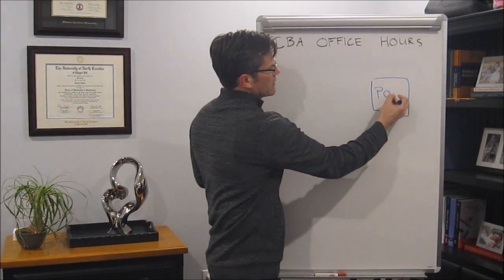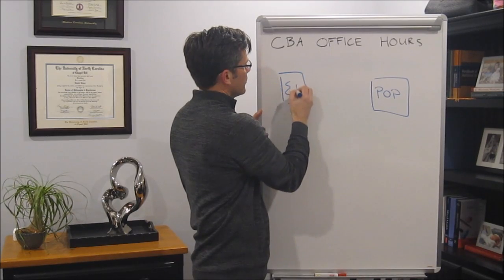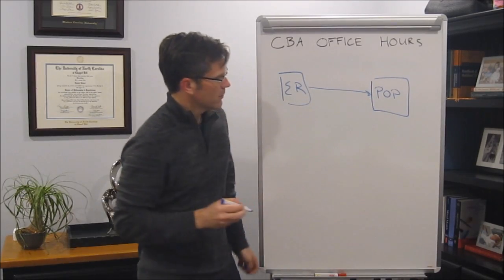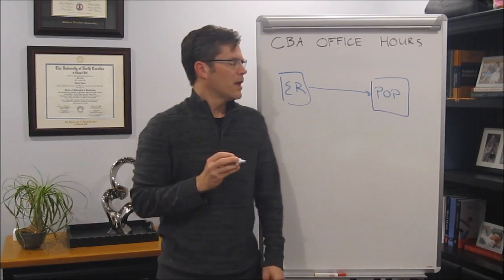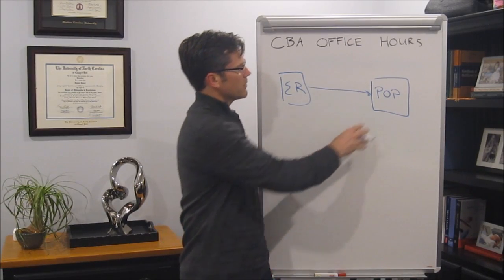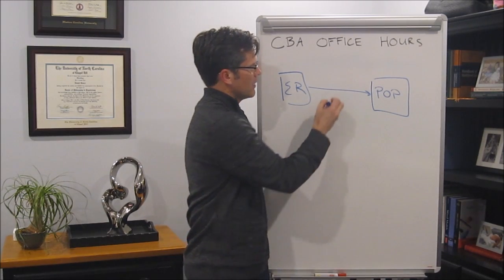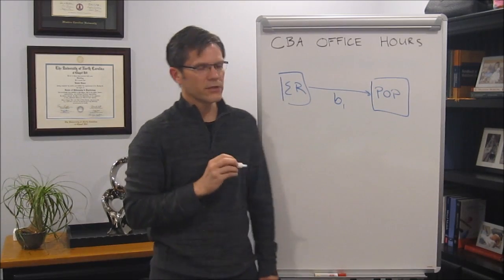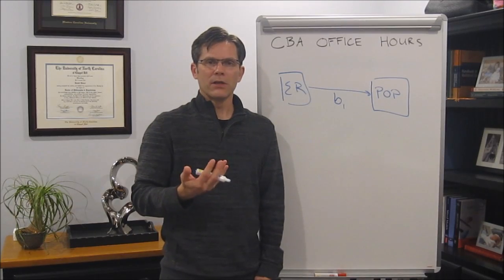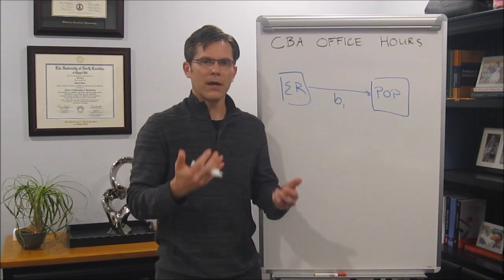I'm going to represent each of these variables with a box. So I have a box for popularity and a box for emotion regulation. I'm going to represent the effect between those two variables with a single-headed arrow. If we were to estimate this effect by a standard regression model, we would predict popularity as a function of emotion regulation and get an effect estimate. We'll call that B1 for the effect of emotion regulation on popularity, and we would hope that our estimate would be an unbiased estimate of that relationship in the population.